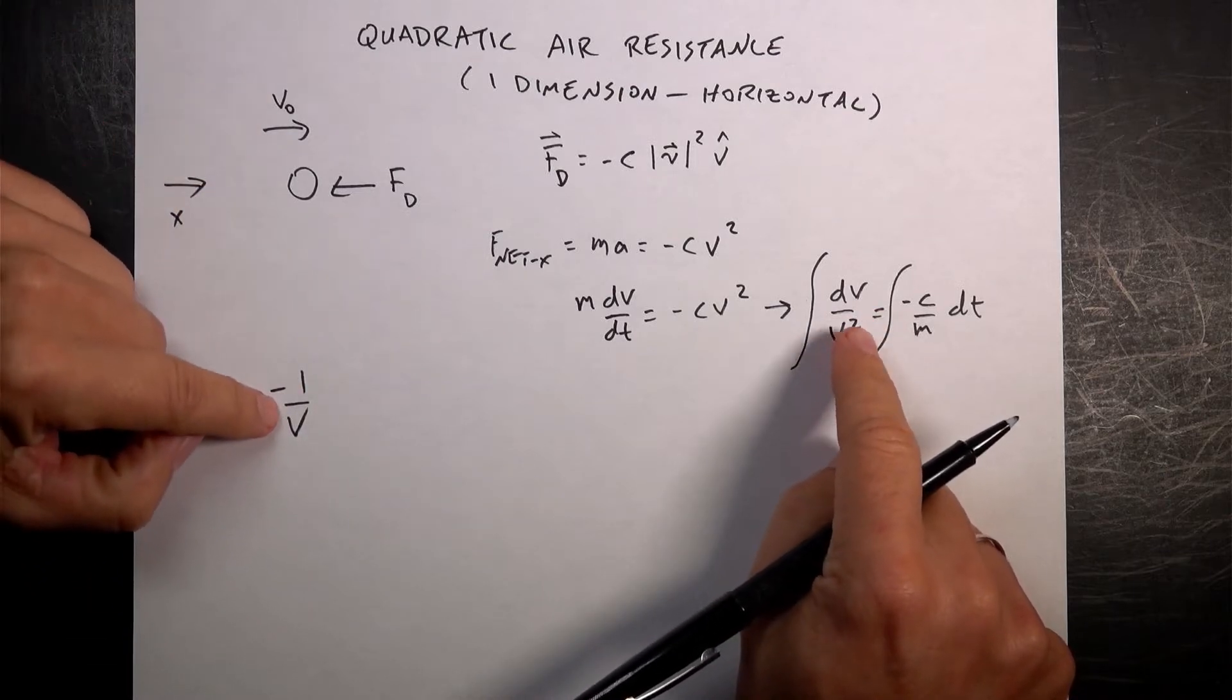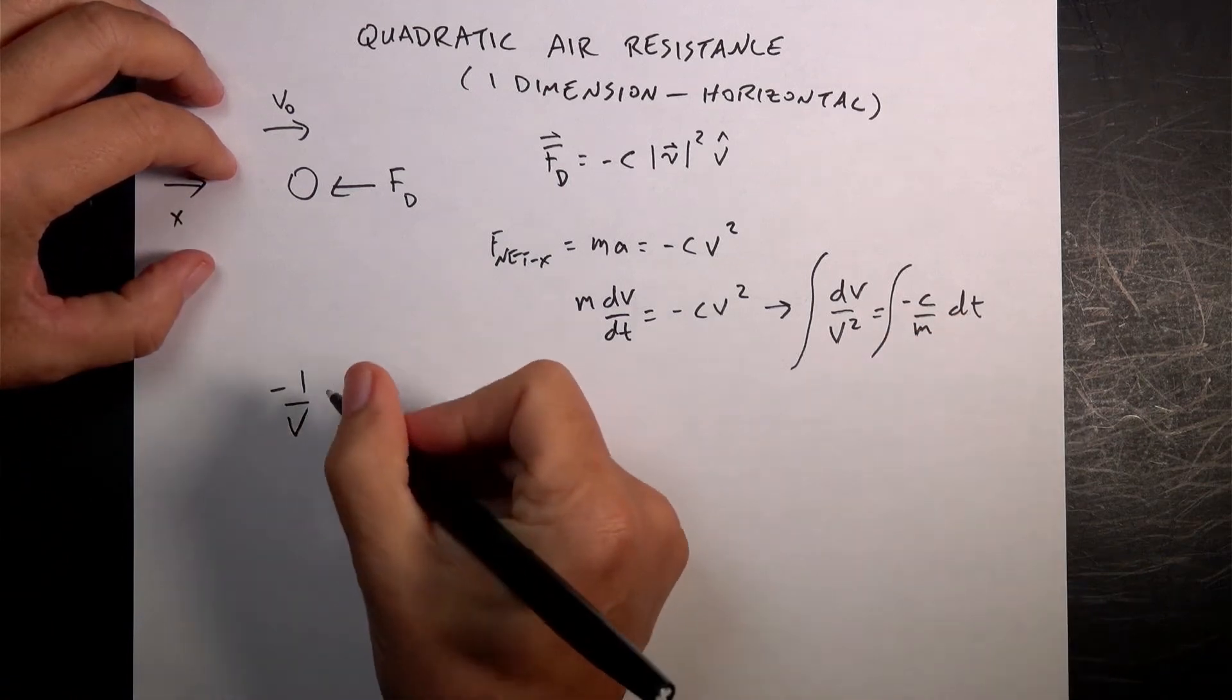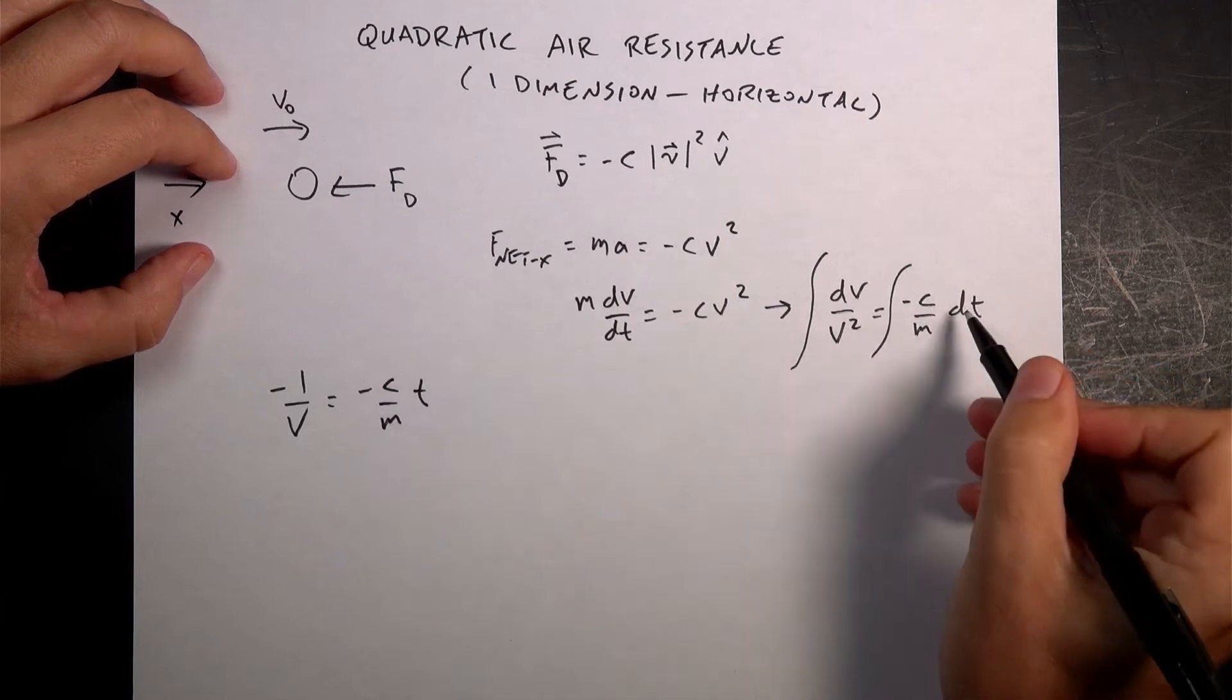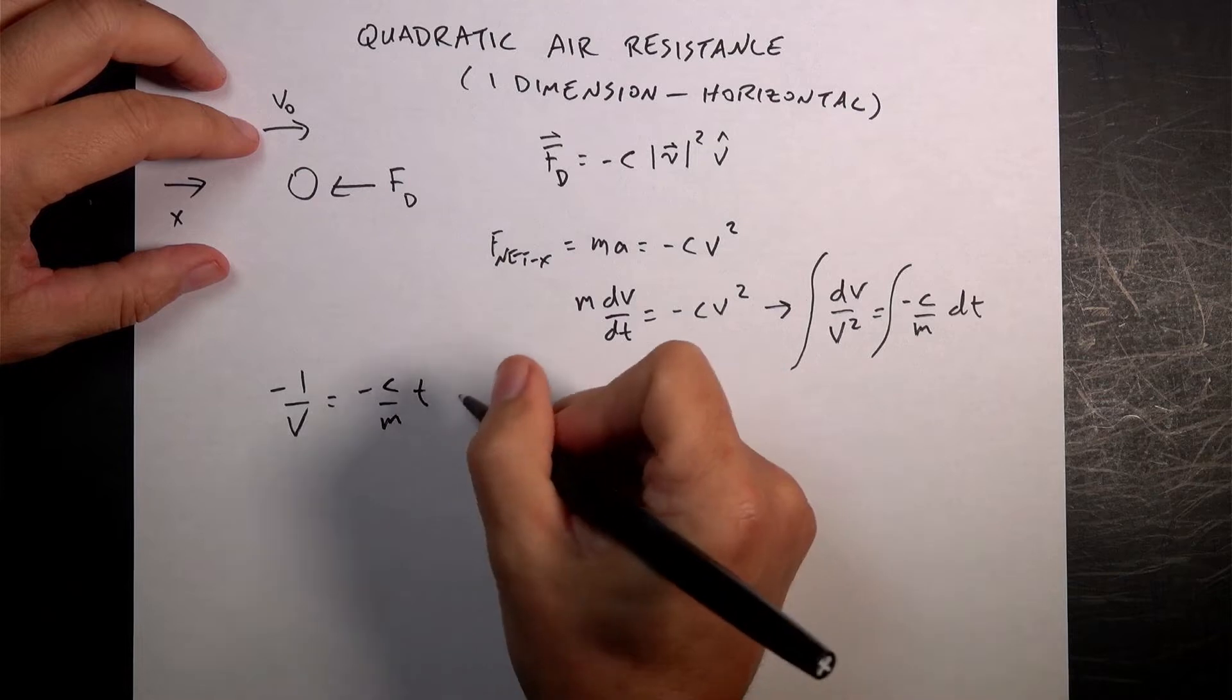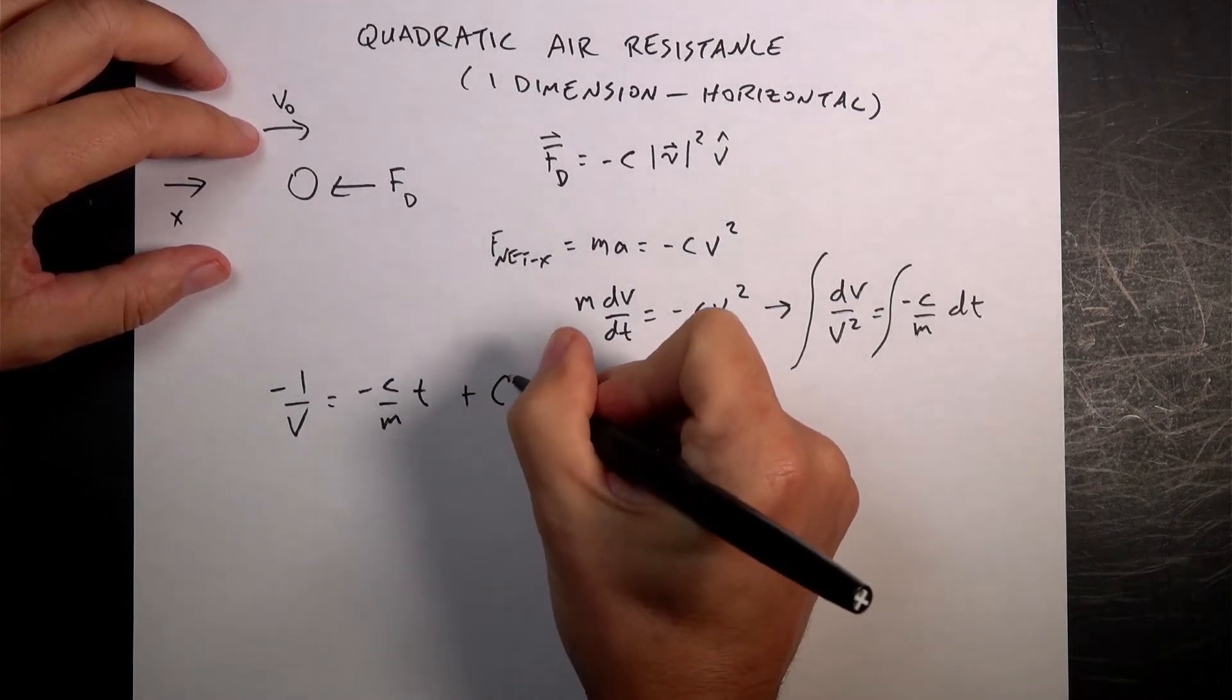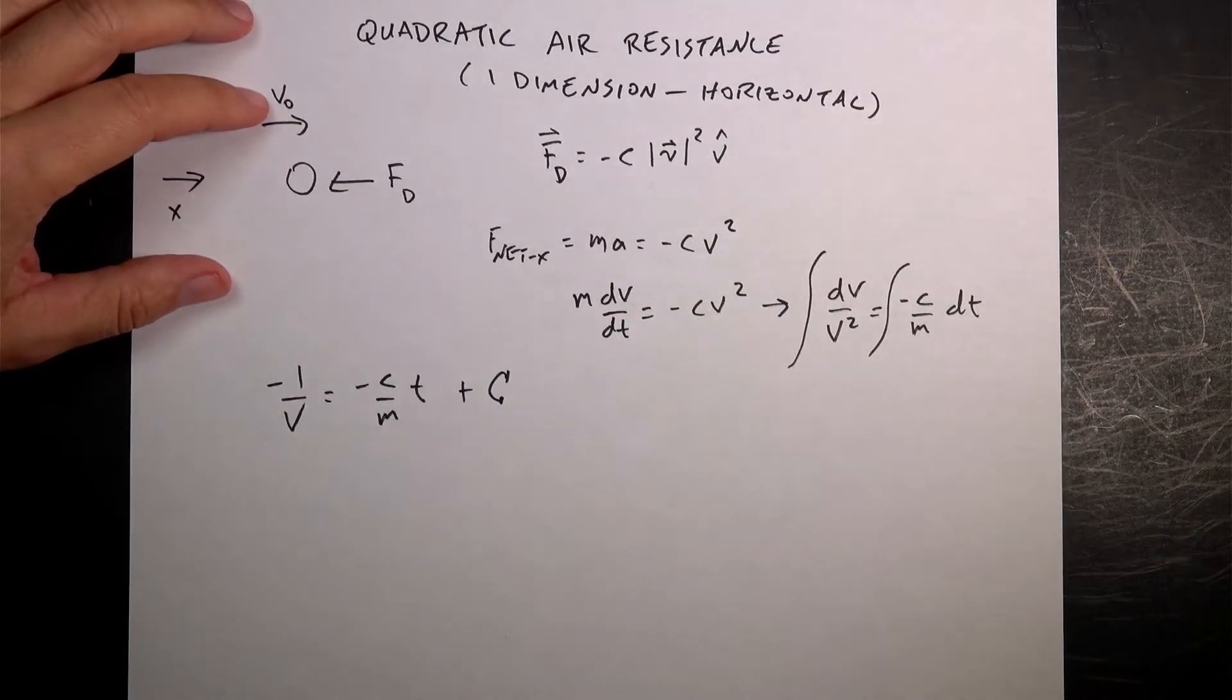And then here, this is pretty easy. I have negative c over m t, because I just have, those terms are constant, and I integrate dt, I get t, and then I have plus some constant. This is a capital C. It's capital. I want to use c for the constant.